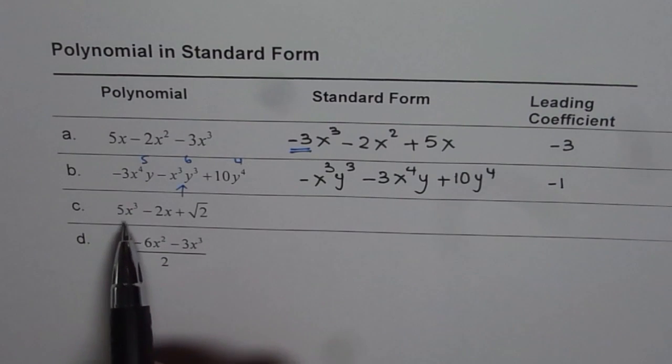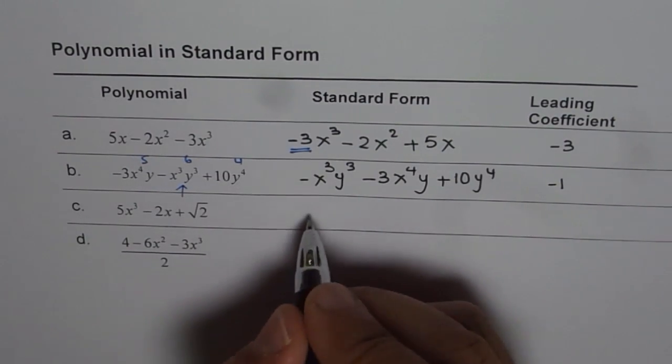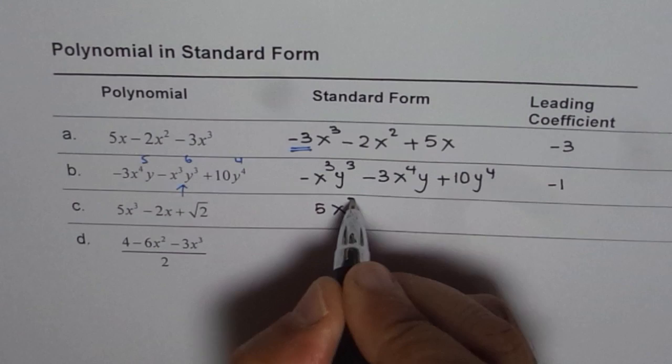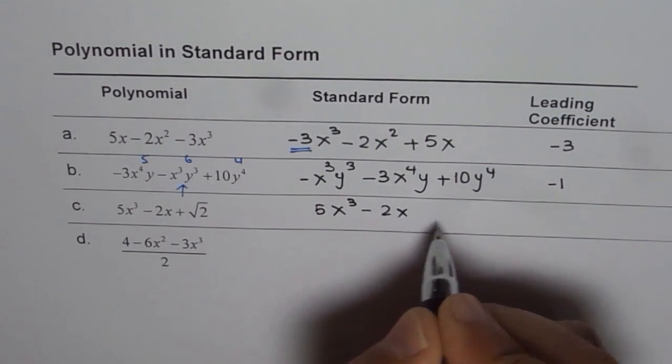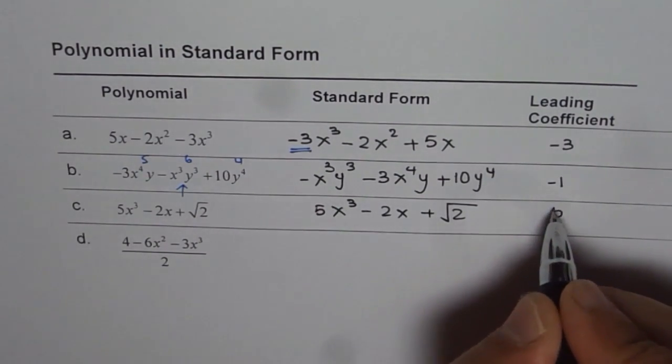Part c is 5x cubed minus 2x plus square root 2. This is already written in standard form, so let's copy it as such. 5x cubed minus 2x plus square root 2. Here the leading coefficient is the number 5.